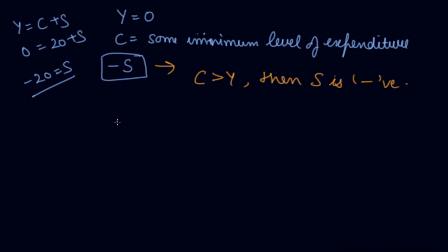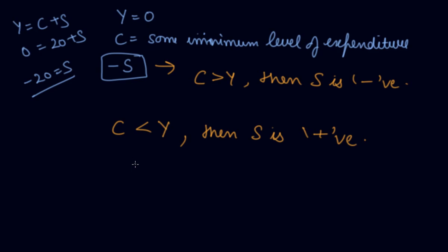When your consumption is less than your income — meaning your income has increased — then your saving is positive. You are saving some part of your income and spending some part on consumption expenditure. This is the saving function.